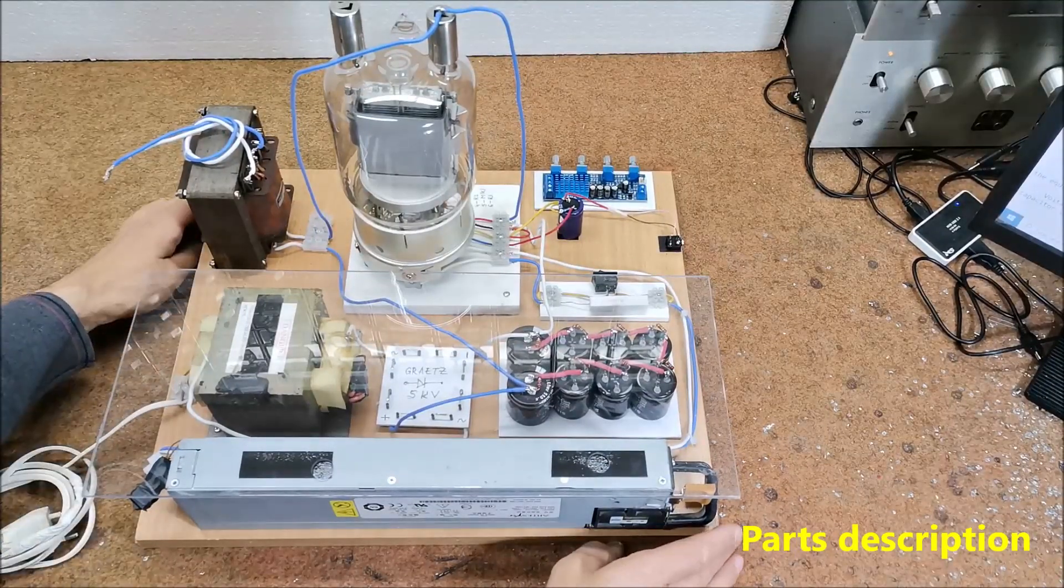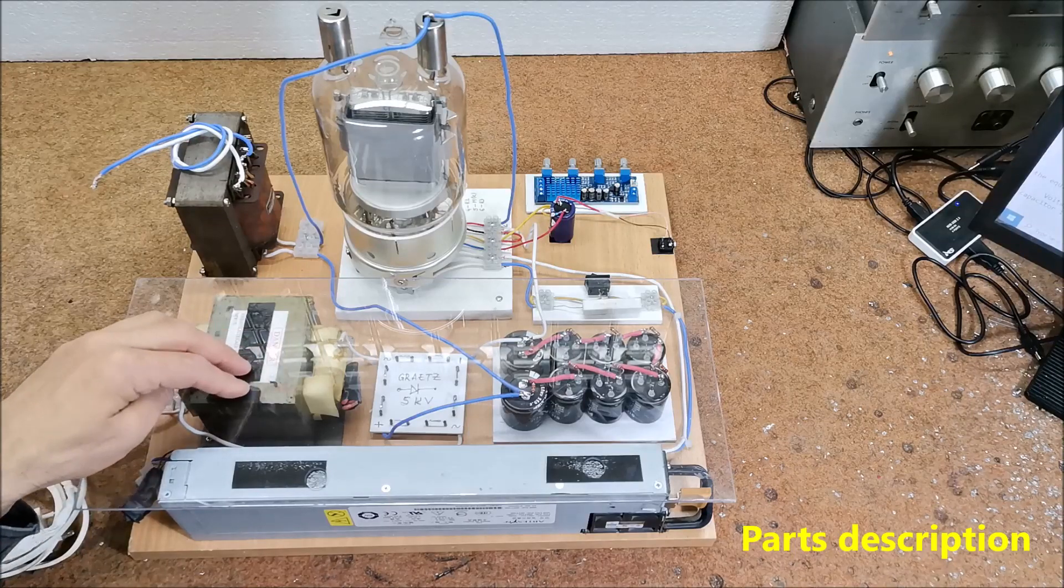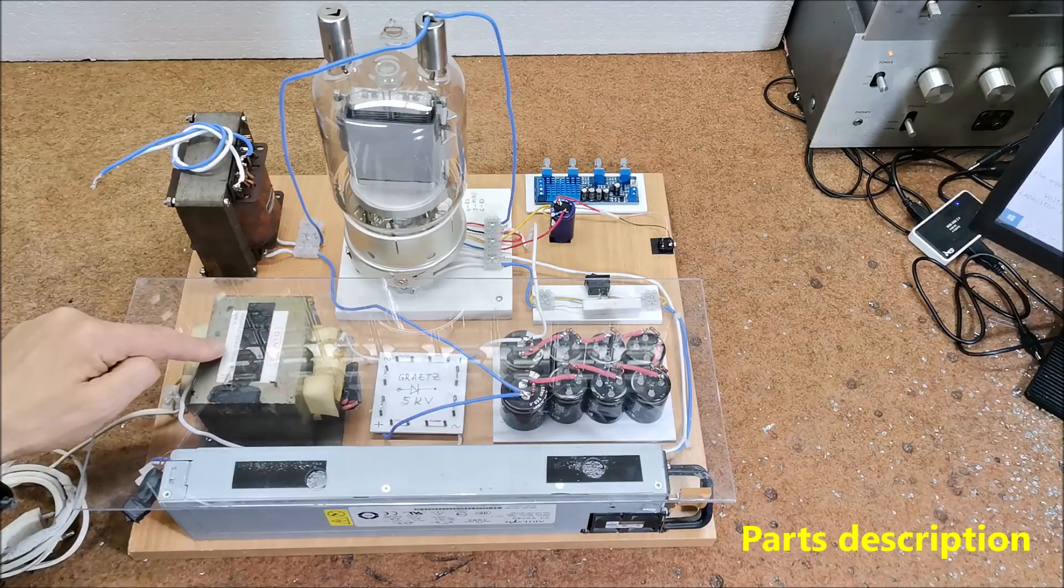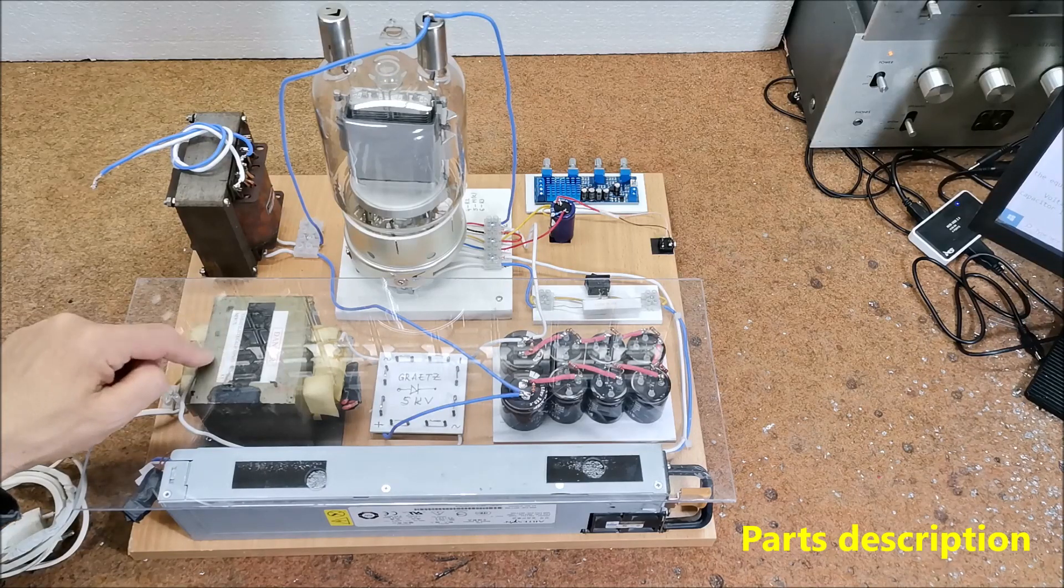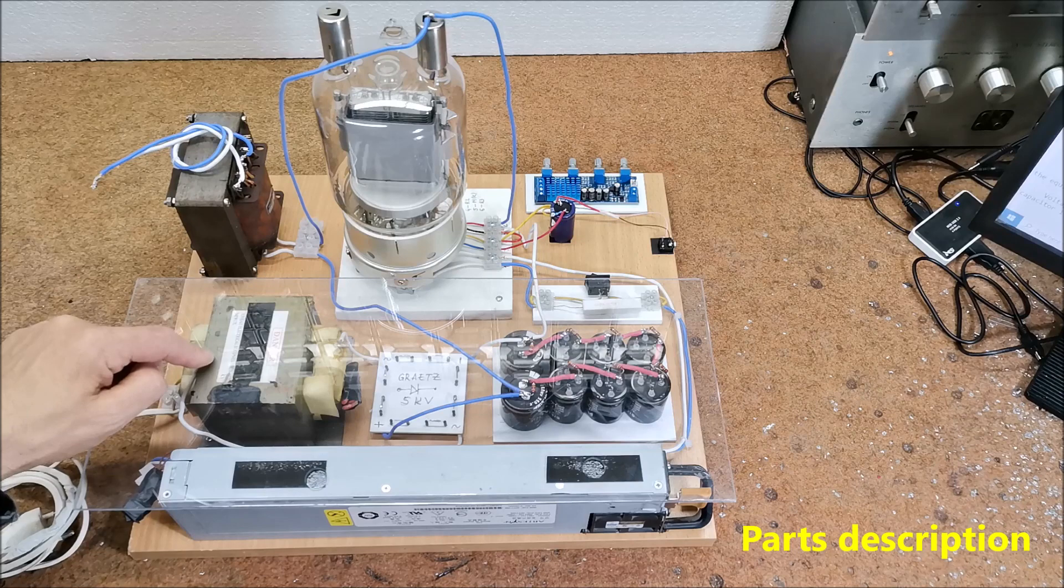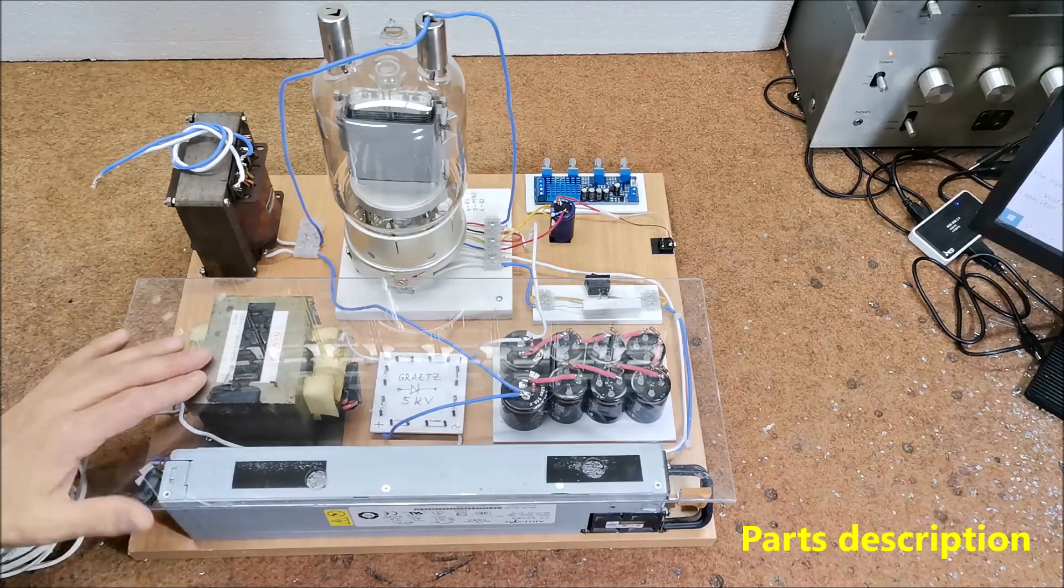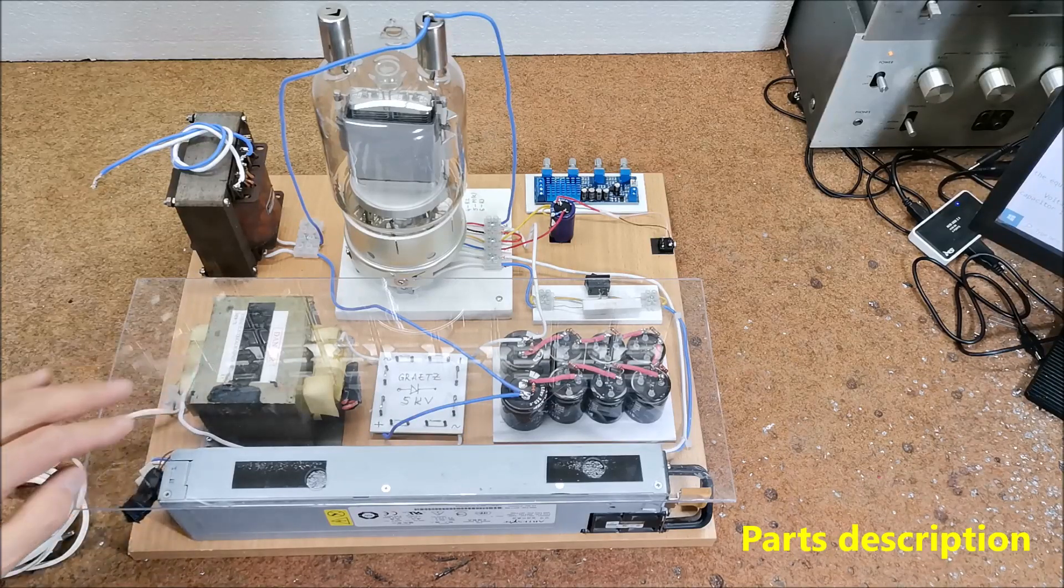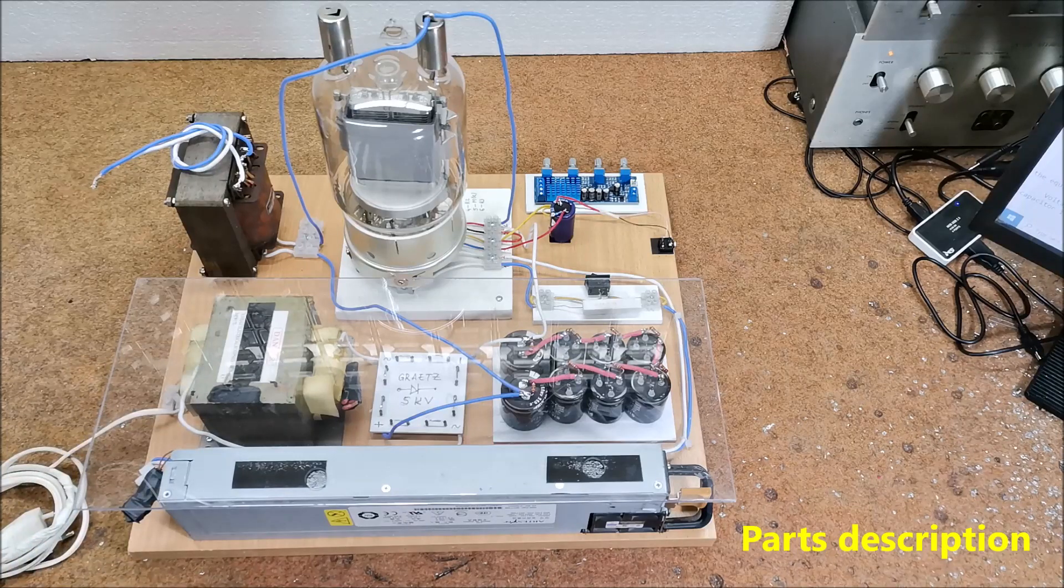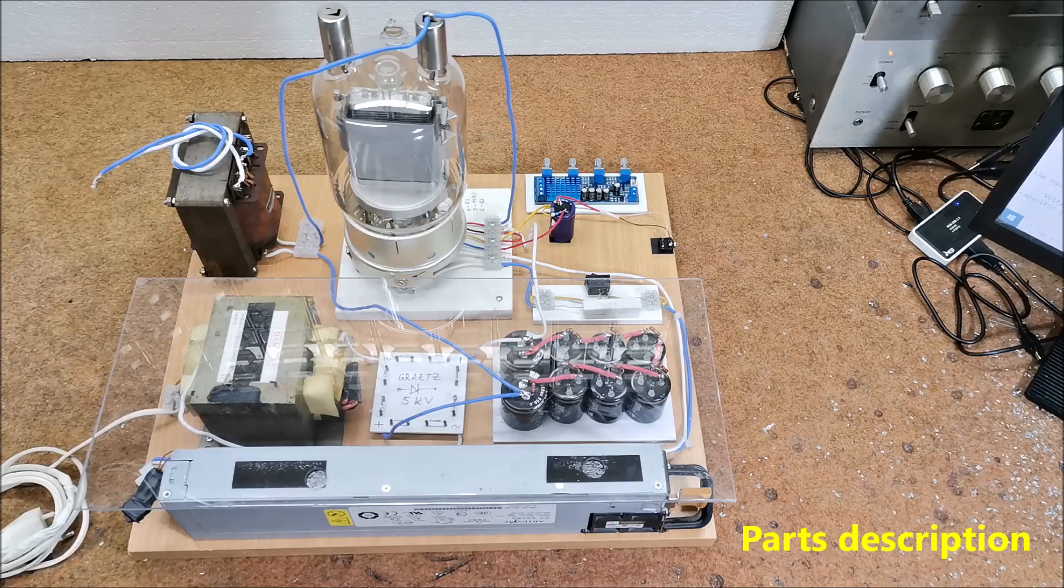The next part is the anode power supply for the tube. For this purpose a microwave oven transformer is used which is relatively inexpensive and can be easily purchased at a service center. This type of transformers are not intended for long term continuous operation, so it is desirable to use two such transformers to which both the primary and the secondary are connected in series as shown on the circuit.